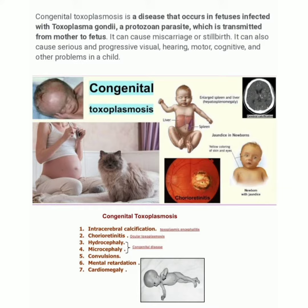It can cause miscarriage or stillbirth. It can also cause serious and progressive visual, hearing, motor, cognitive, and other problems in a child. Now let us look at the presentations of congenital toxoplasmosis.